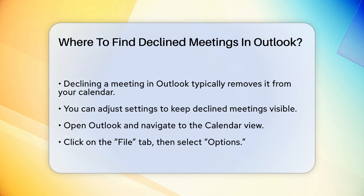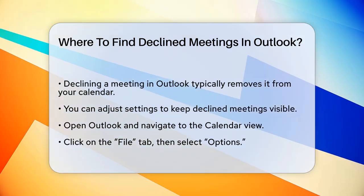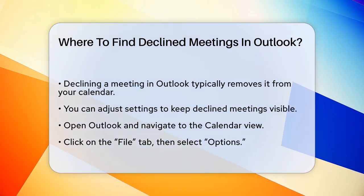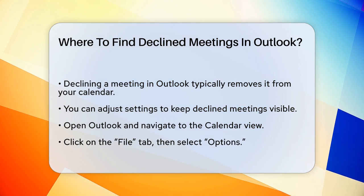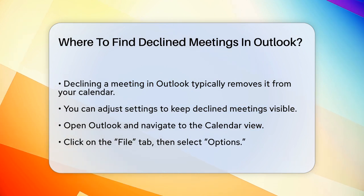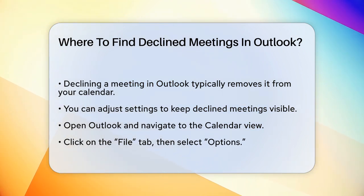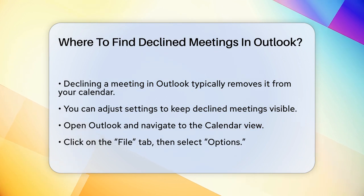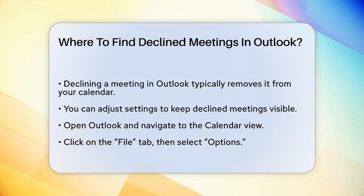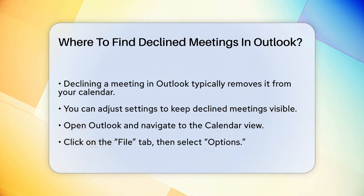First, when you decline a meeting in Outlook, it usually gets removed from your calendar view. However, you can change this behavior to keep those meetings visible. To do this, you need to adjust your Outlook settings — open Outlook and go to the Calendar view.